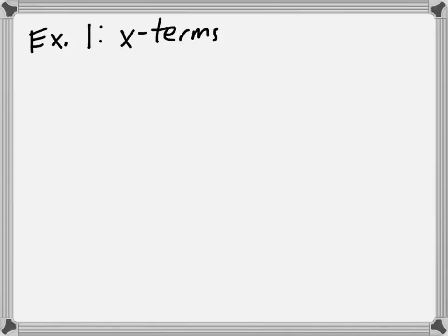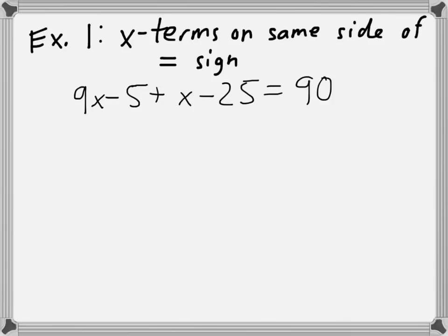So in this first example, make sure you're taking notes, we'll look at an equation where the x terms are on the same side of the equal sign. Like this problem: 9x minus 5 plus x minus 25 equals 90. Both x terms, the 9x and the x, are on the same side of the equal sign. They're both on the left.